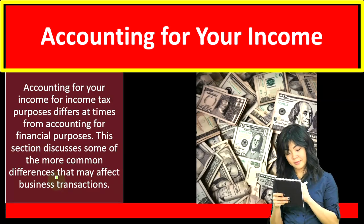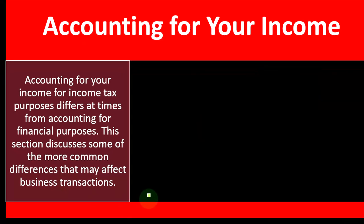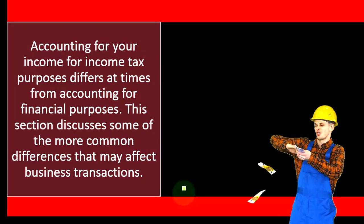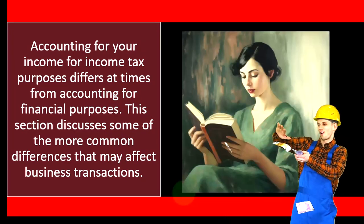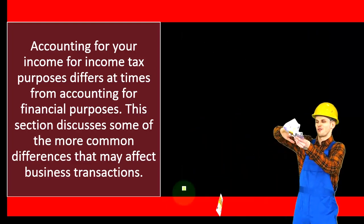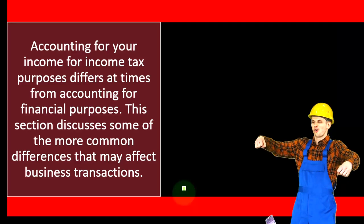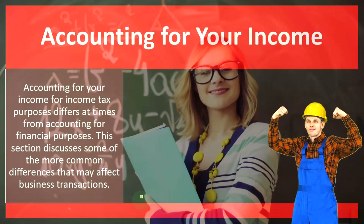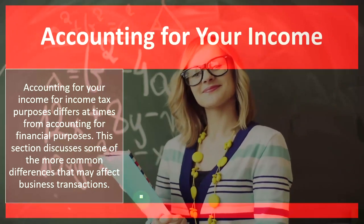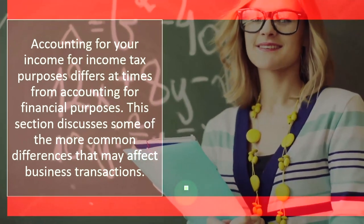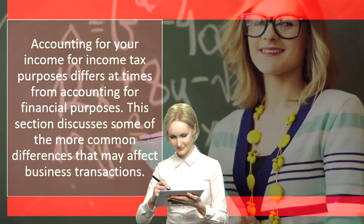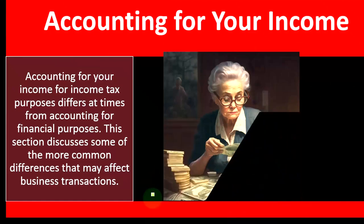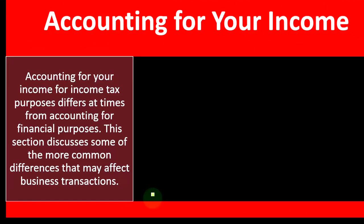So now we're going to be talking about accounting for your income. Accounting for your income for income tax purposes differs at times from accounting for financial purposes. When we think about the bookkeeping and the general accounting process, what we're trying to do is compile past financial transactions in a way that makes sense for decision-making purposes for us as managers, and possibly for external users like investors. But here, we're compiling that same financial information — primarily the income statement — in order to do the taxes.